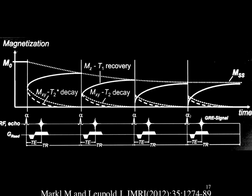In steady state, you give a pulse, do a gradient refocusing, get a signal, and put in gradients different ways to give each signal a different phase encoding to fill different parts of k-space. The TR can be very short — 25 to 50 milliseconds instead of the typical 500 or 3000 milliseconds. If it's 50 milliseconds instead of 500 milliseconds, you can decrease the acquisition time by a factor of 10.